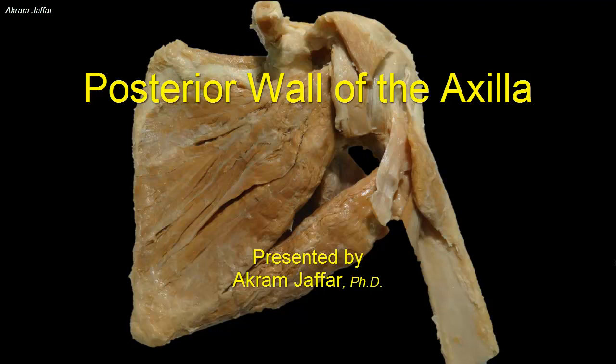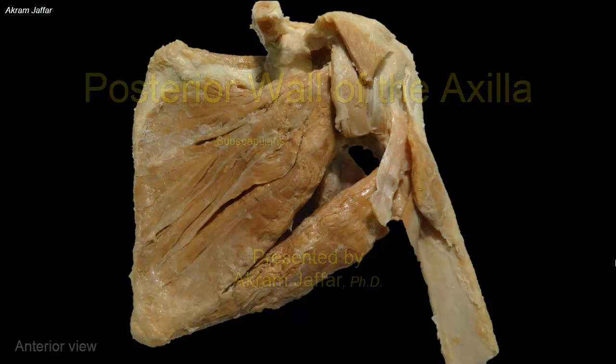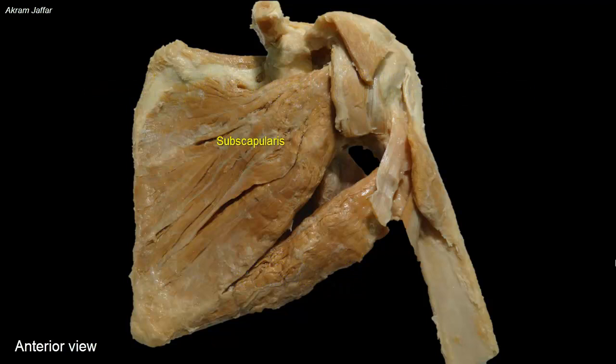The posterior wall of the axilla is formed by the scapula, subscapularis, teres major, and latissimus dorsi muscle. Teres major and latissimus dorsi form the posterior axillary fold.